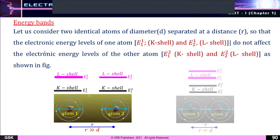This does not affect the electronic energy levels of the other atom. That is, E₁,₂ means the first energy level of the second atom. E₁ means K-shell, and E₂ means L-shell.